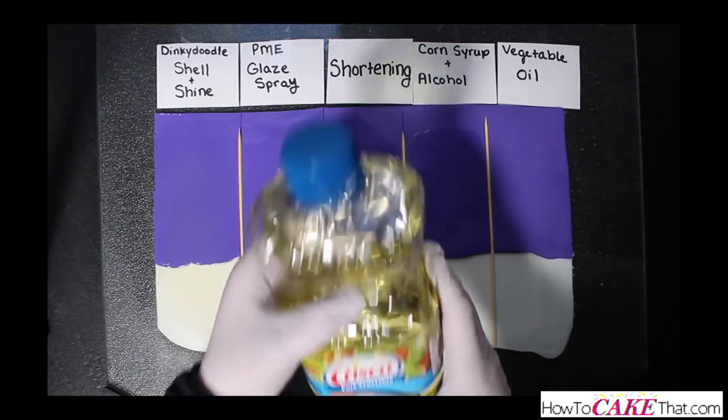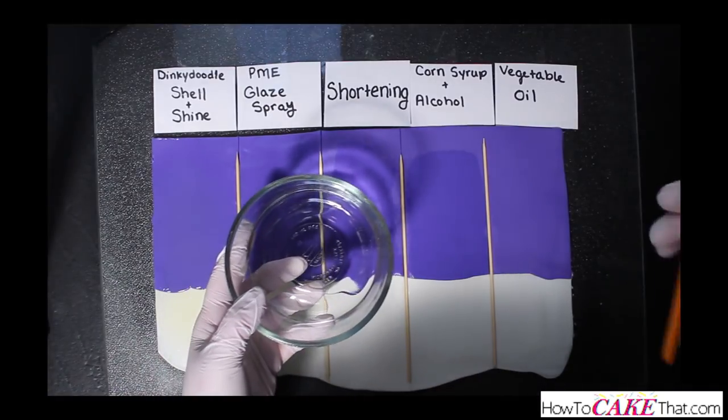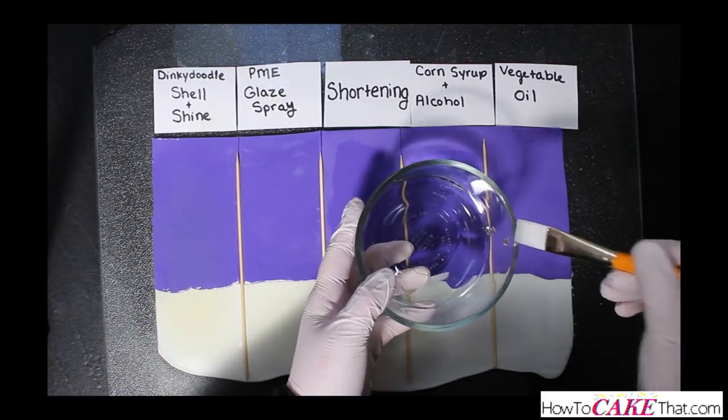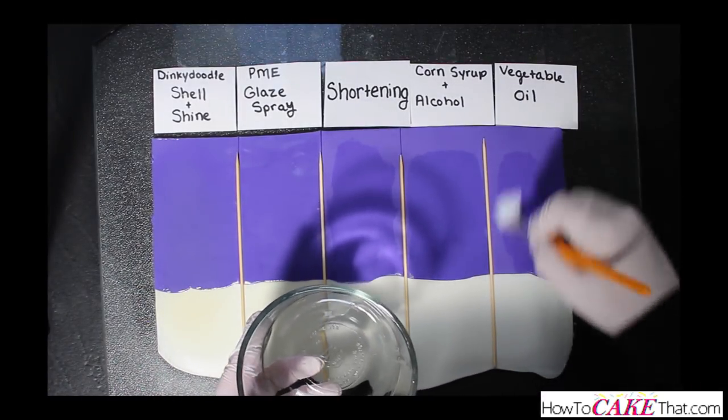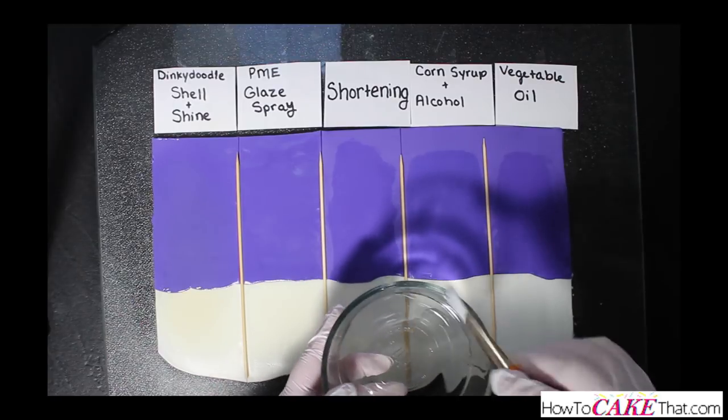The last ingredient we will be testing is vegetable oil. I poured a little vegetable oil into a dish, then I used a small paintbrush to paint it onto my fondant.